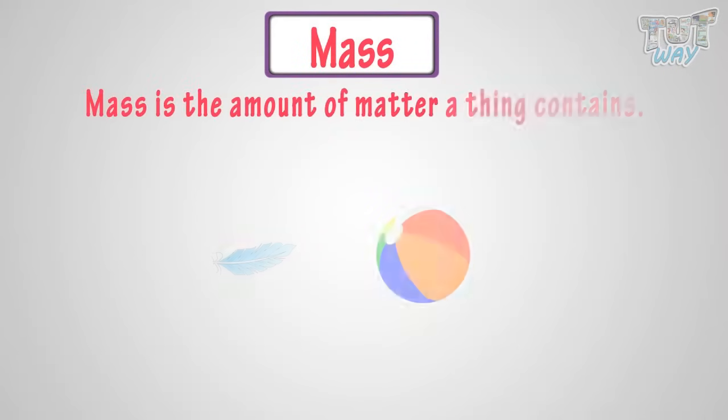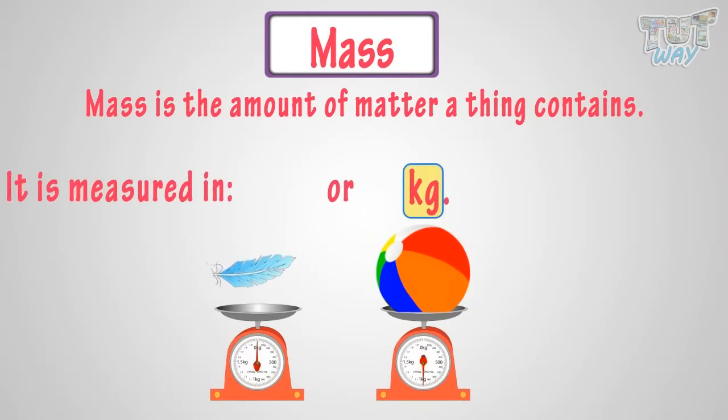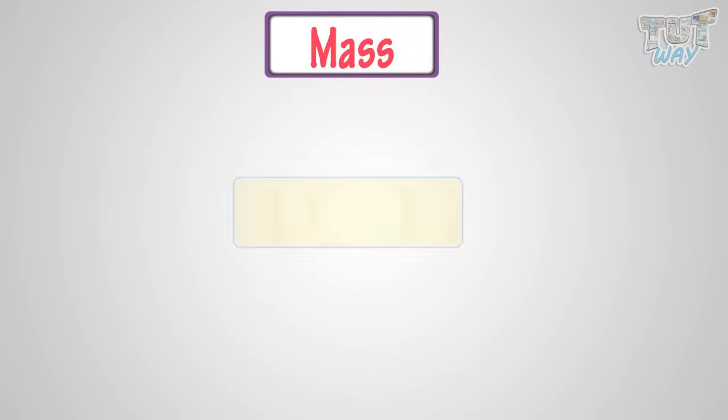The mass is the amount of matter that a thing contains. The units of measuring mass are kilograms and grams, where one kilogram is 1,000 grams.